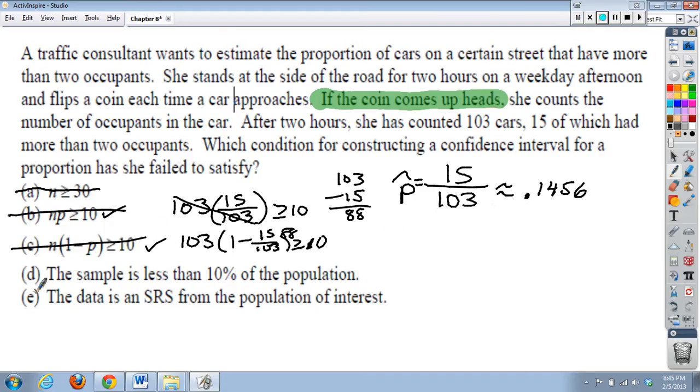So it's neither one of those. The sample is less than 10% of the population. Well, the number of cars that approach, there's really unlimited number that's going on here. So, it doesn't really seem like that meets the condition. So if we get to e, the data is a simple random sample from the population of interest. Well, we already kind of talked about the coin allowed her to do something randomly, but